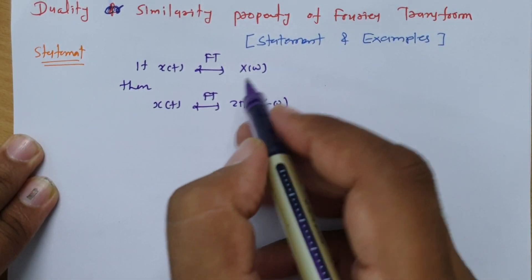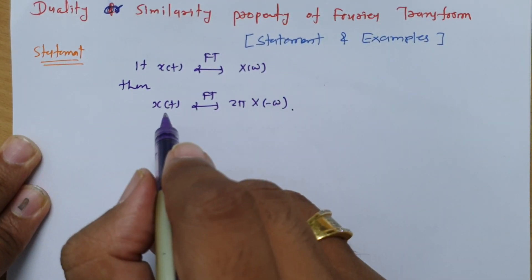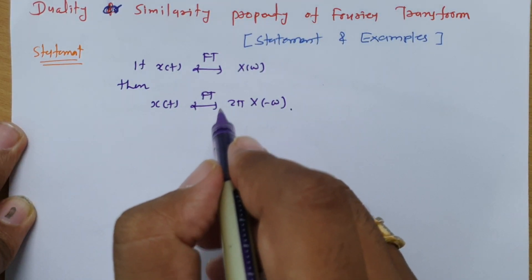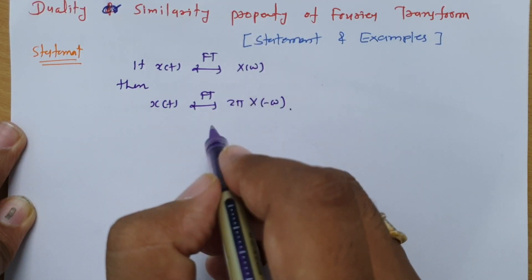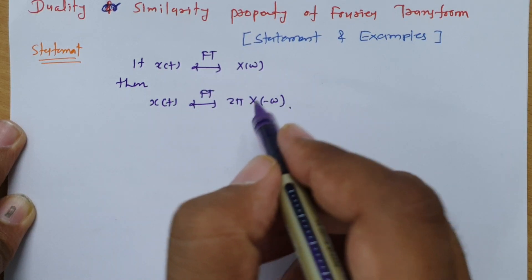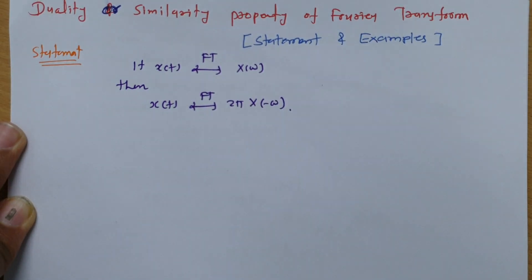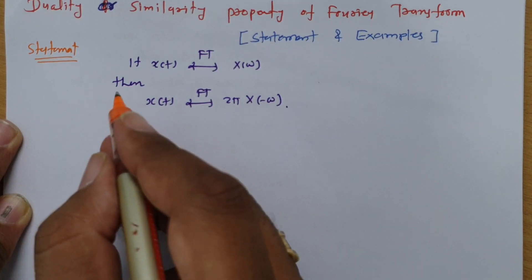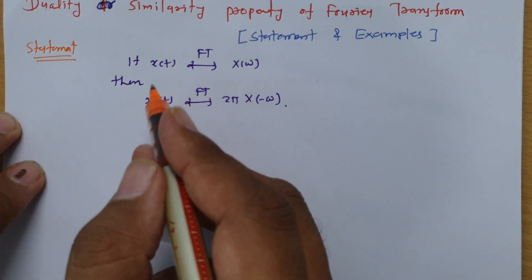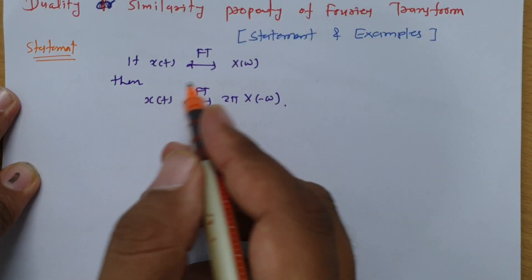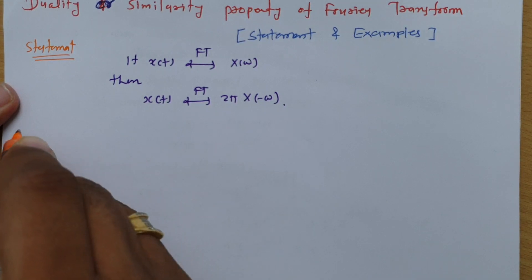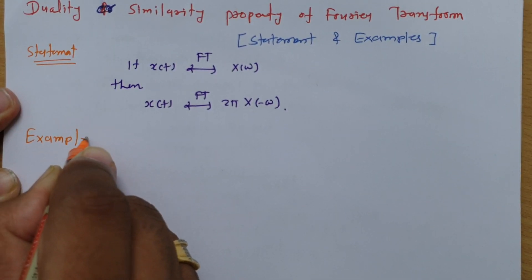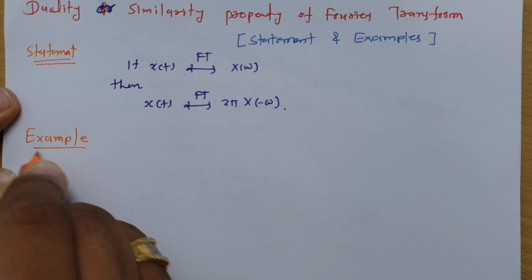By the statement alone it is a little difficult to understand, so let us have some examples — it will be more clear what is the meaning of this statement. I'll consider some examples and then you will see how we can use this property to solve some typical problems.